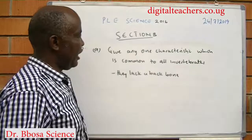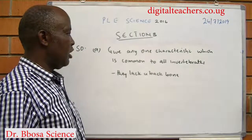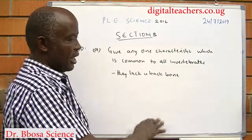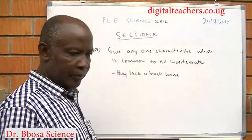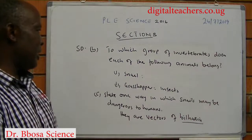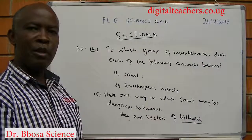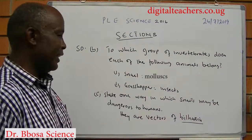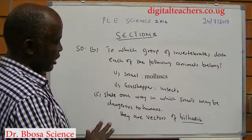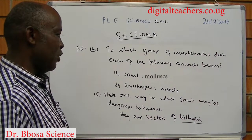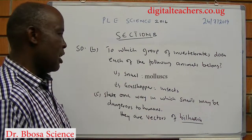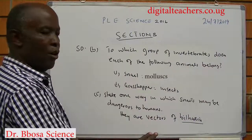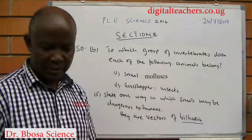Number 50A: give any one characteristic which is common to all invertebrates. They lack a backbone. To which group of invertebrates does each of the following animals belong? Snails are mollusks; grasshoppers are insects. State one way in which snails may be dangerous to human beings: they are vectors for bilharzia.